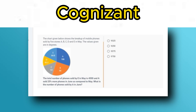The total number of phones sold by E in May is 4,500. A sold 25% more phones in June as compared to May. What is the number of phones sold by A in June? If you have prior knowledge about DI, please pause the video, start solving, and give the answer in the comment section.